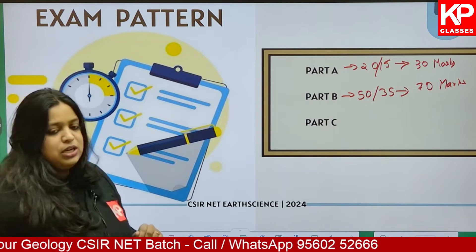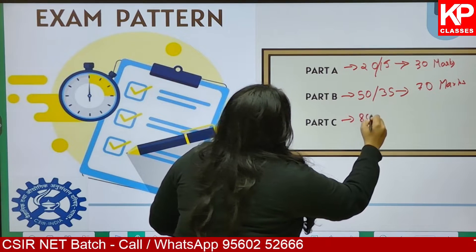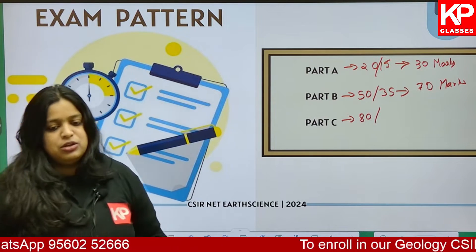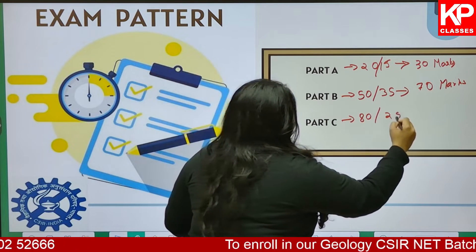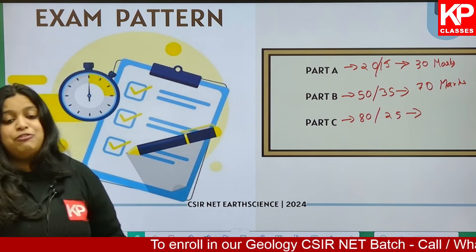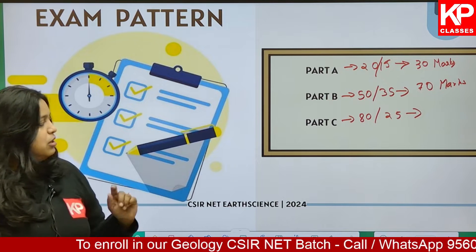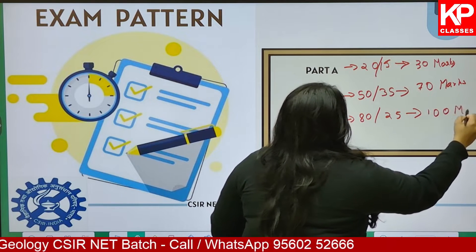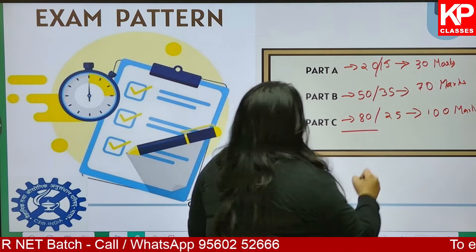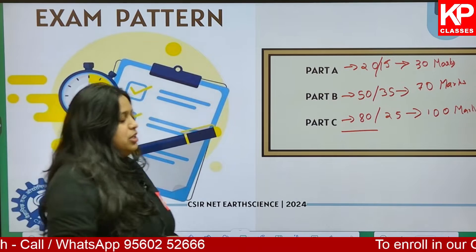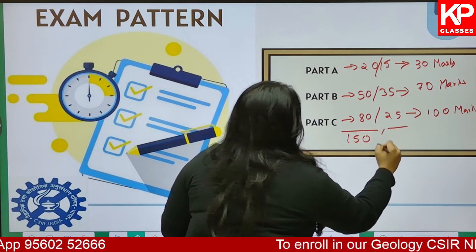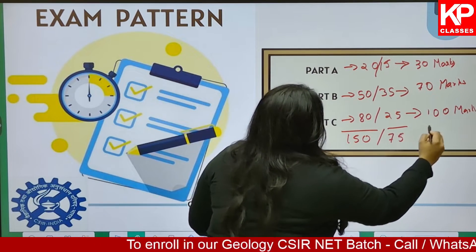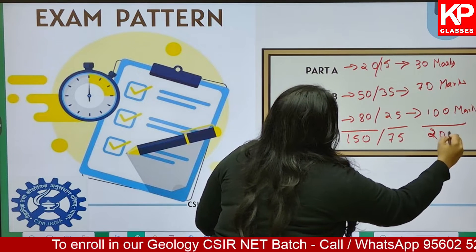Part C is the analytical section — a tougher portion. In Part C, there are a total of 80 questions provided, and out of these 80 the maximum number of attempts is 25. Part C questions are of 4 marks each, so the total mark of Part C is 100. Altogether, the exam paper has 150 questions, the maximum attempt is 75, and the total mark is 200.